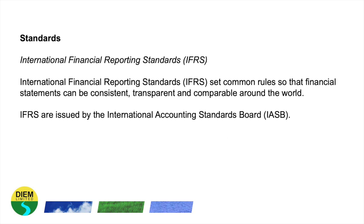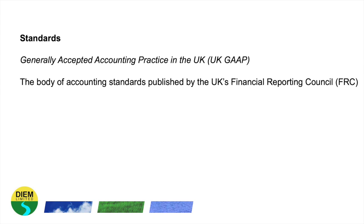Behind accounting theory there are standards. At the top level there's the International Financial Reporting Standard, or IFRS. These set common rules so that financial statements throughout the world can be consistent, transparent and comparable across the world. IFRS are issued by the International Accounting Standards Board. In the UK, accountants use Generally Accepted Accounting Practice, which is called UKGAAP, and this body of accounting standards is published by the UK's Financial Reporting Council.